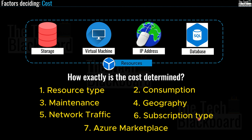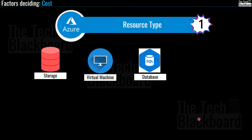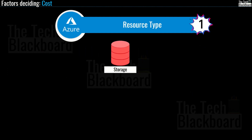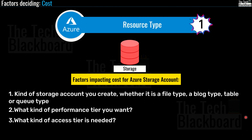The type of resource is perhaps the most important factor in determining cost. Whether you are creating a storage account, a virtual machine, a database, or just a public IP address, costs can hugely differ by resource type. Consider a storage account: the kind you create — file, block, table, or queue — affects cost. Other factors include performance tier, access tier (hot, cold, or archive), redundancy settings (local or global), and the region. All these factors are considered when calculating cost.